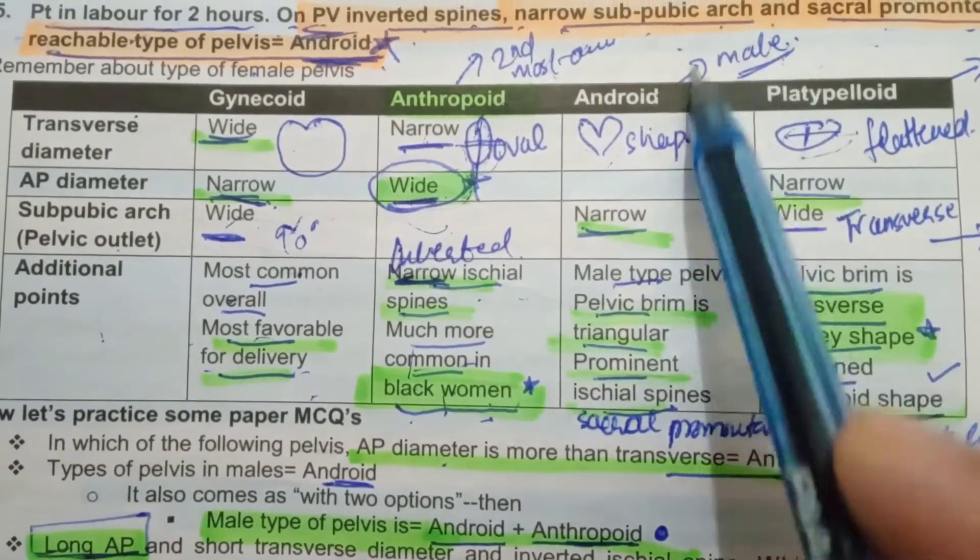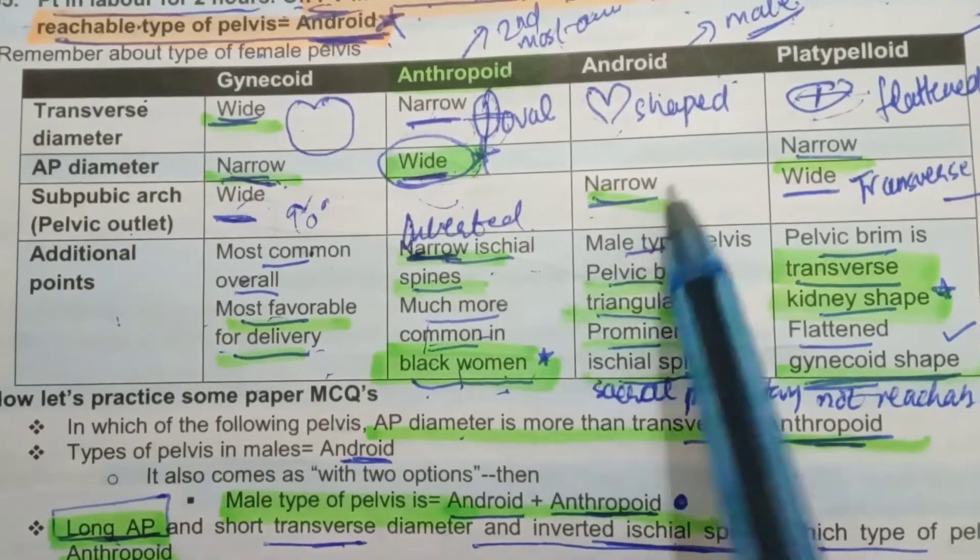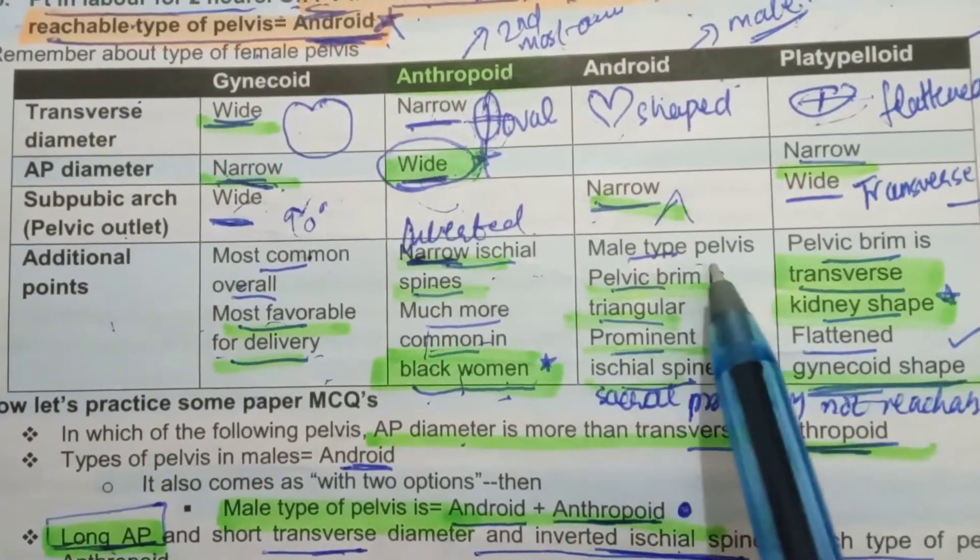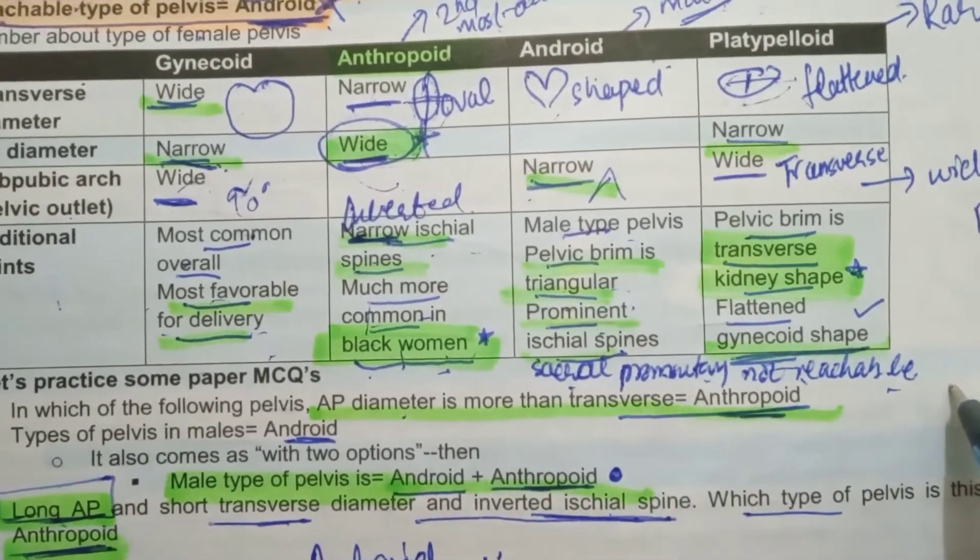Android heart shaped. It is a common type of pelvis in males. This is subpubic arch or pelvic outlet, it is very narrow. Male type pelvis. Pelvic brim is triangular. Prominent ischial spines. And sacral promontory will not be reachable.